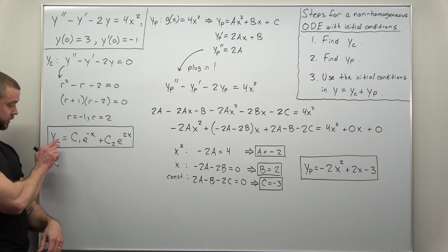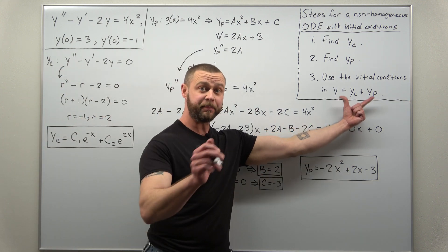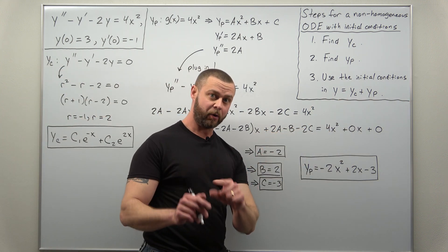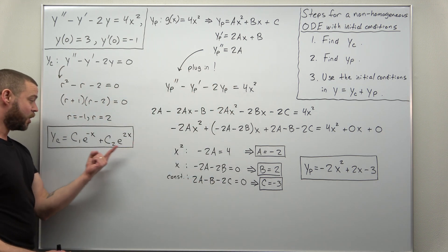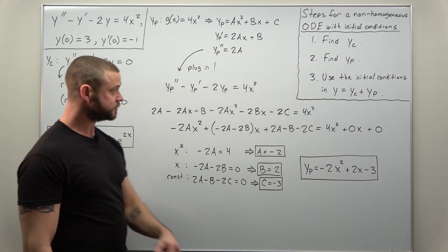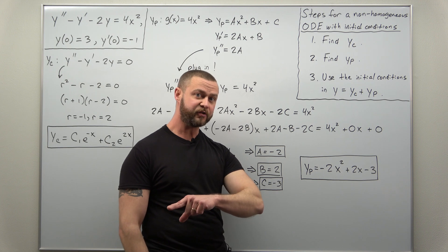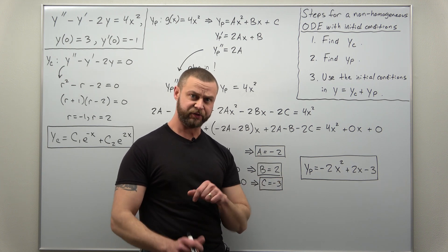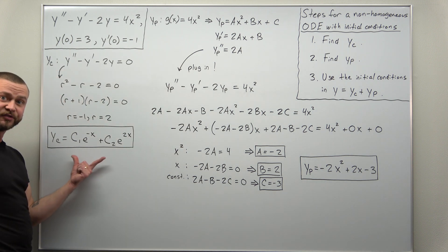So it looks like Y, but be careful, our full solution now is YC plus YP. So make sure you do not plug your initial conditions into only the complementary solution. Your initial conditions go into the full solution, complementary solution plus particular solution. All right, so right now we have the complementary solution.